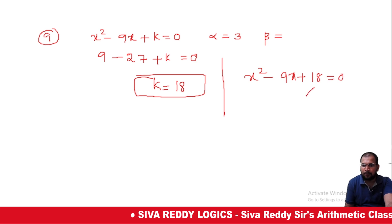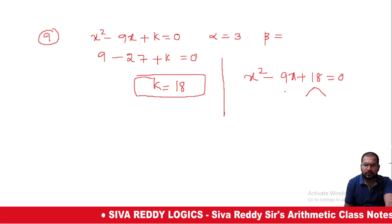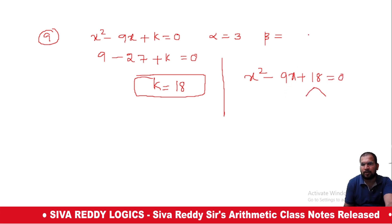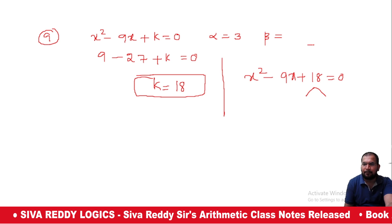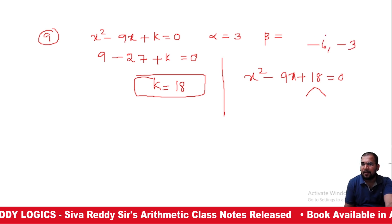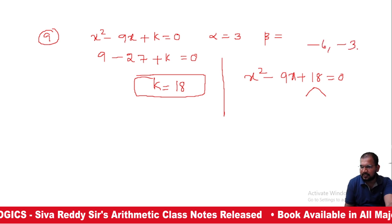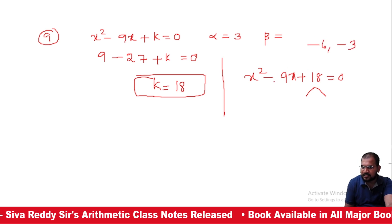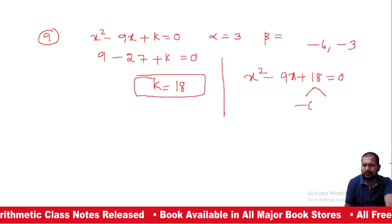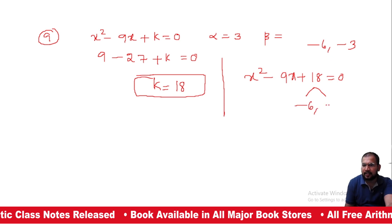The roots are 6 and 3. When we add, the sum is 9, and the product is 6 × 3 = 18. So alpha = 6 and beta = 3.